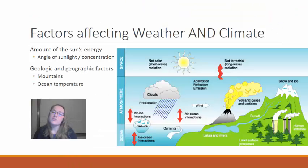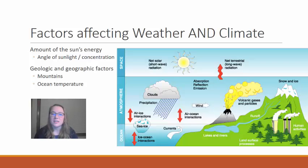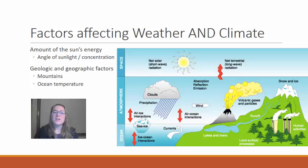Now there are several factors that affect daily weather and the overall climatic patterns. These are primarily driven by the amount of the Sun's energy due to the angle of sunlight, the concentration of that sunlight, and those seasonal cycles — and also by geologic and geographic factors such as mountains and distance to the ocean.